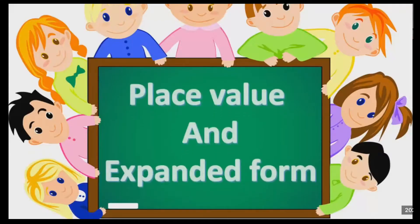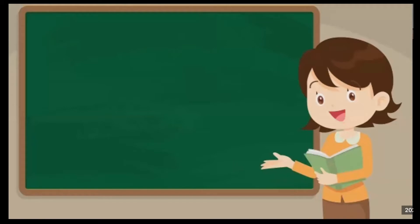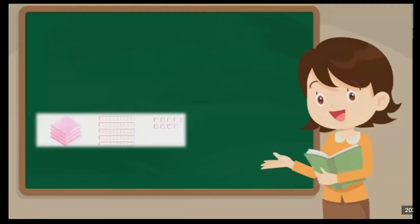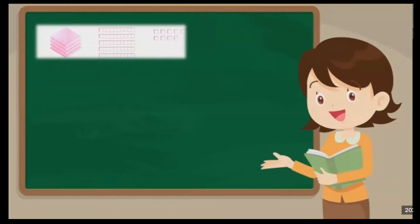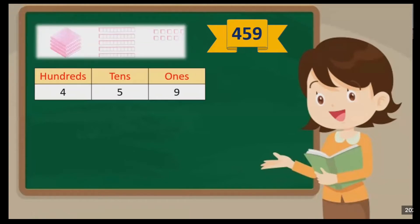Place value and expanded form. This is the book we are using. What do you see here? You can see the cubes, and the total is 459. You can see 100, another 100, another 100, and another 100 — that's 400. Plus 10, 20, 30, 40, 50 — so that is 450. Plus 9, so 459.